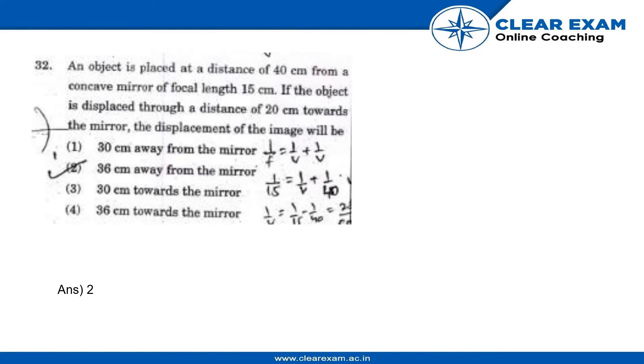Hello everyone, let's discuss question number 32. Here it is given that an object is placed at a distance of 40 centimeters from a concave mirror with focal length 15 centimeters. If the object is displaced through a distance of 20 centimeters towards the mirror, the displacement of the image will be? We will take this question in two steps.